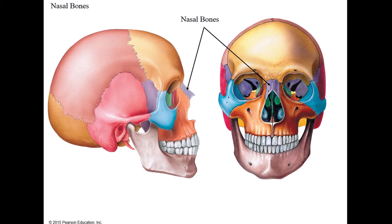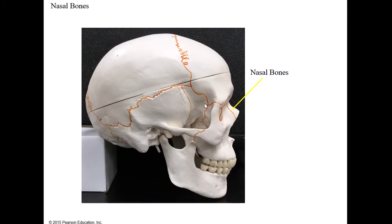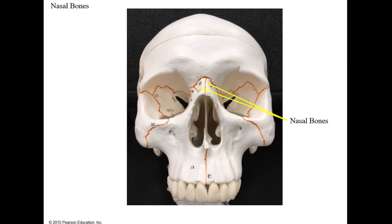The next two bones are the nasal bones, which form the bridge of the nose. If you put on glasses - sunglasses or reading glasses - they would sit right on these two bones. Here's an anterior view showing the left and right nasal bones, and then the right one seen from the side.